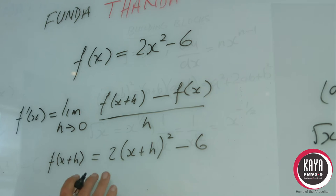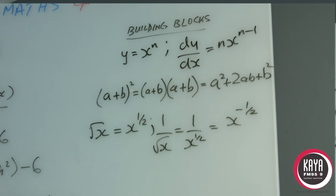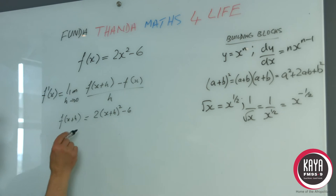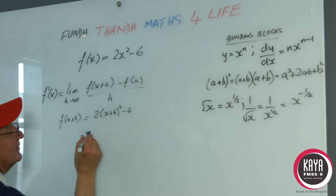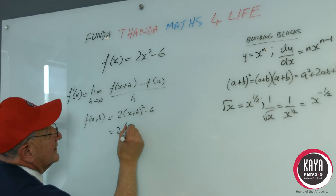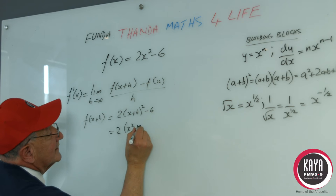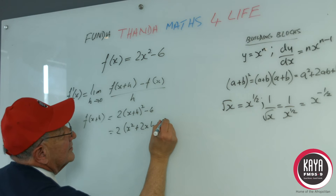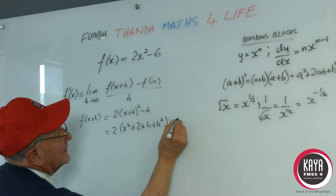To work this out we'll go to a building block because (a + b)² is equal to (a + b)(a + b) which results in a² + 2ab + b². So by implementing it here we are going to get 2(x² + 2xh + h²) - 6.